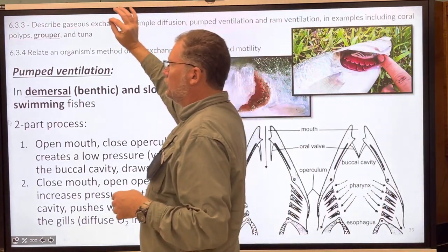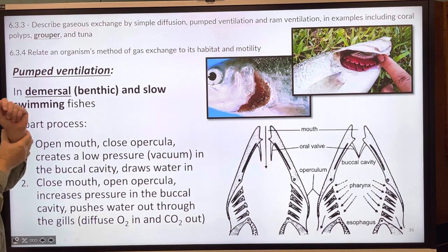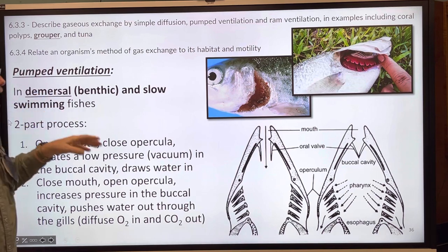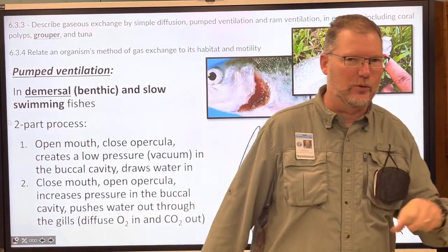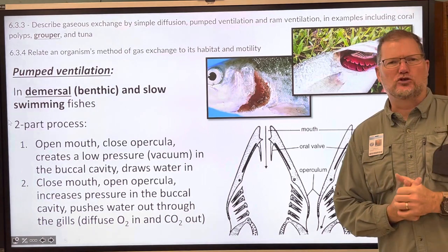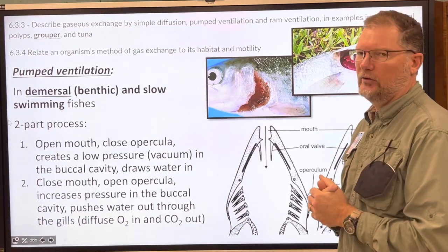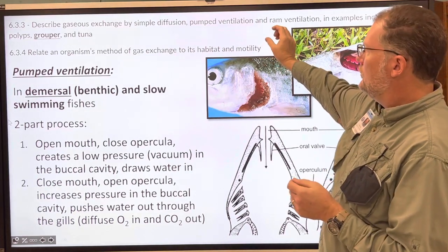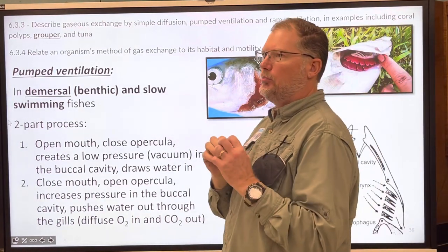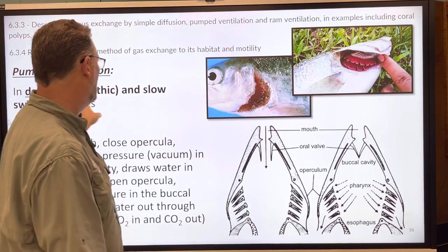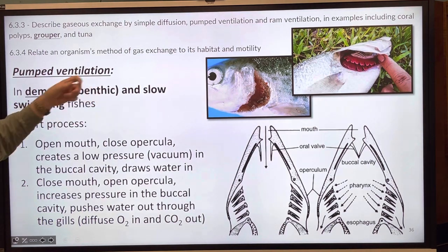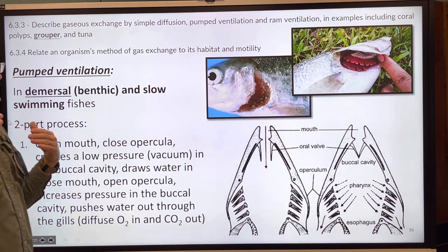Now we're moving on from polyps to grouper, and then we'll go to tuna. A grouper breathes using something called pumped ventilation. In terms of motility and habitat, a grouper is demersal — meaning it typically sits on the bottom, benthic — it doesn't swim a lot.